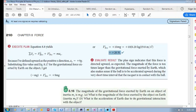So the magnitude of the force of the racket is 10 times larger than the gravitational force exerted by earth, which also makes sense if the ball is to be accelerated upwards during a very short time interval that the racket is in contact with the ball.